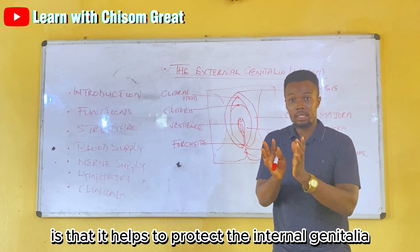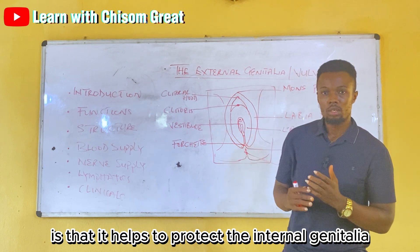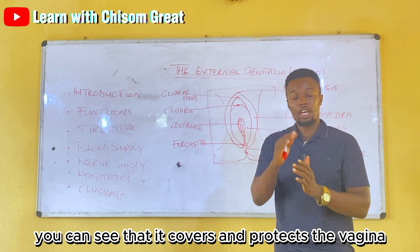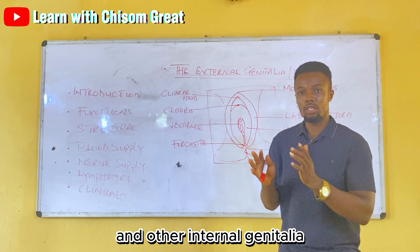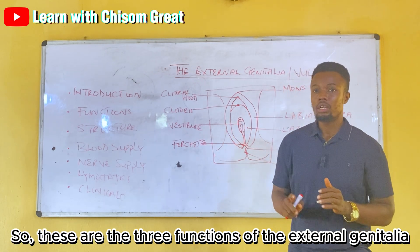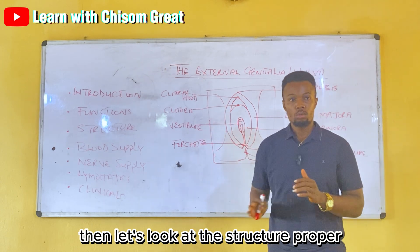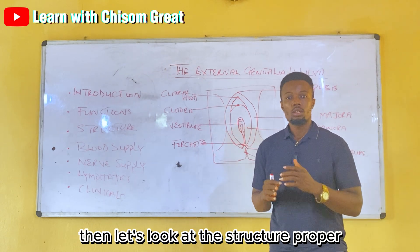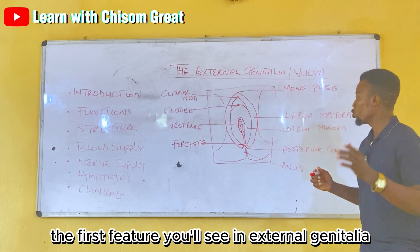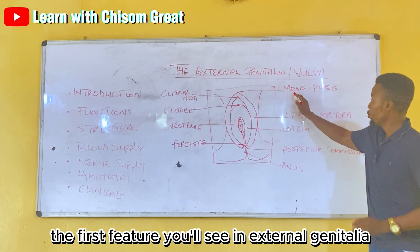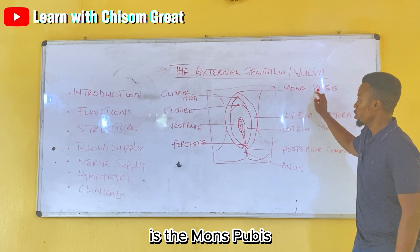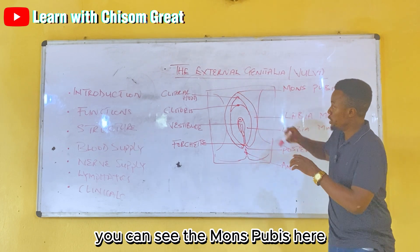The glands help to secrete mucus that lubricates the vagina. The third function of the external genitalia is that it helps to protect the internal genitalia — it covers and protects the vagina and other internal structures. Now let's look at the structures of the external genitalia. The first feature is the mons pubis.